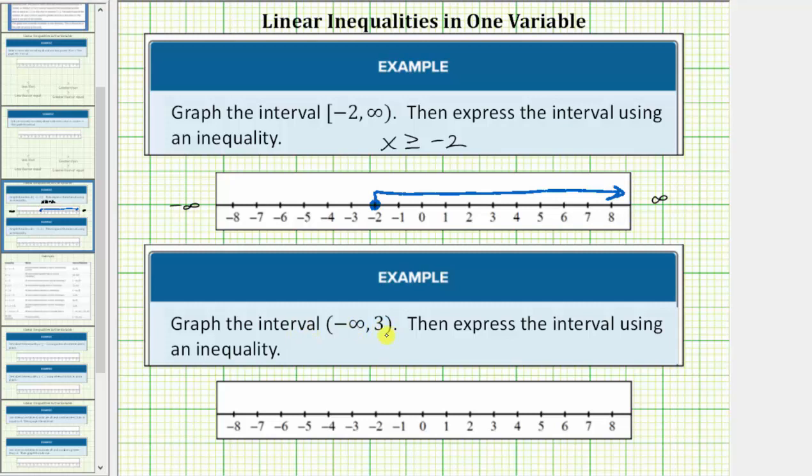To graph the interval, we make an open circle or open point on positive three, and again positive infinity would be to the right, negative infinity to the left. The interval is approaching negative infinity, so we draw an arrow to the left.